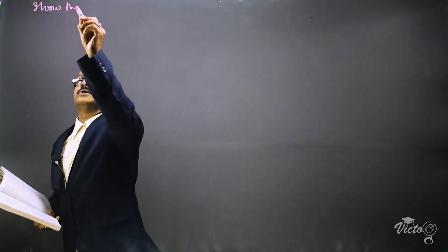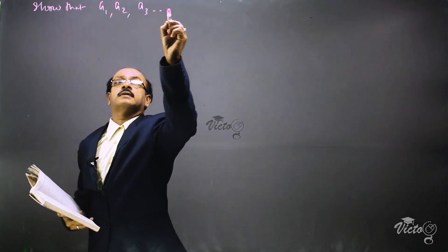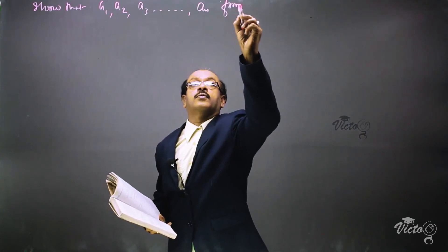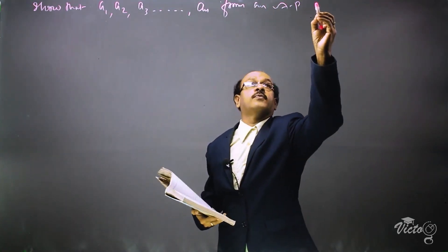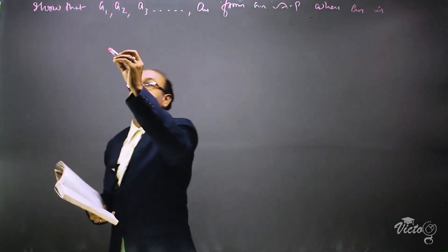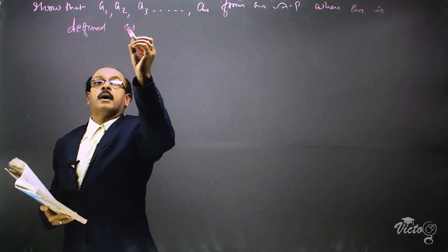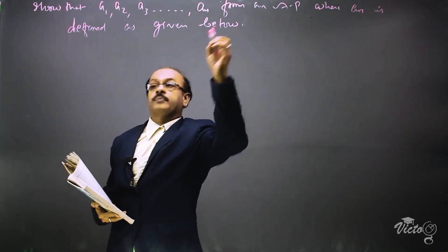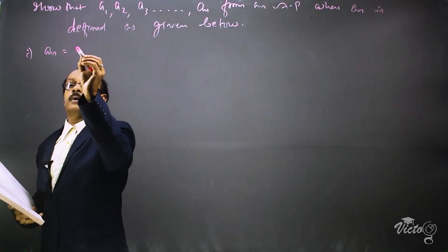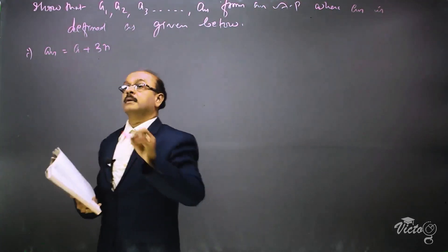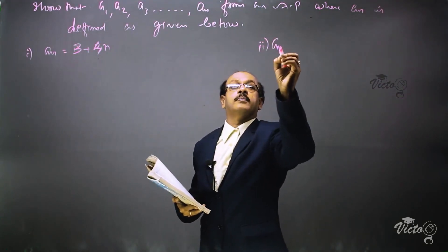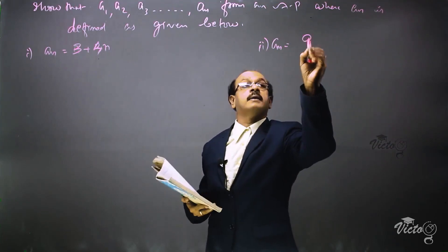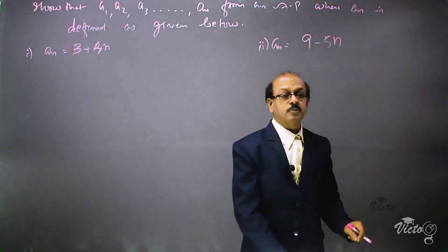The next question is: show that a1, a2, a3, ..., an form an AP, where an is defined as given below. The first one is an = 3 + 4n, and the second one is an = 9 - 5n. Here, the nth terms of two APs are given and we have to find a1, a2, a3, etc., and show that they form an AP.